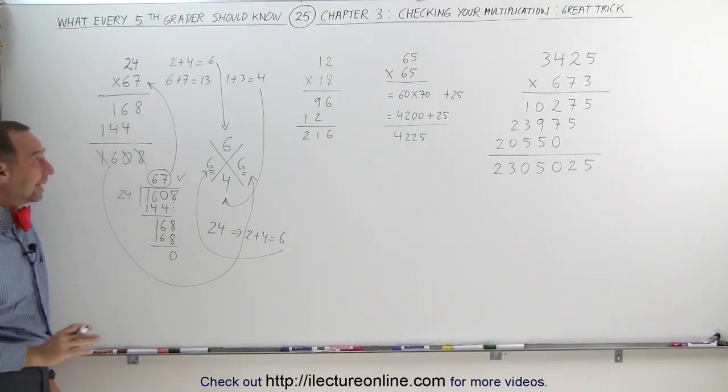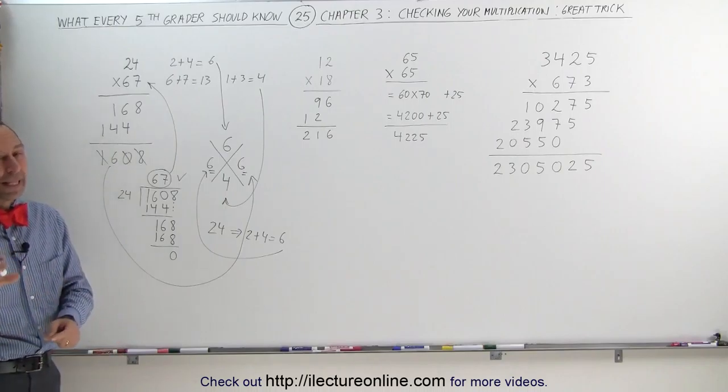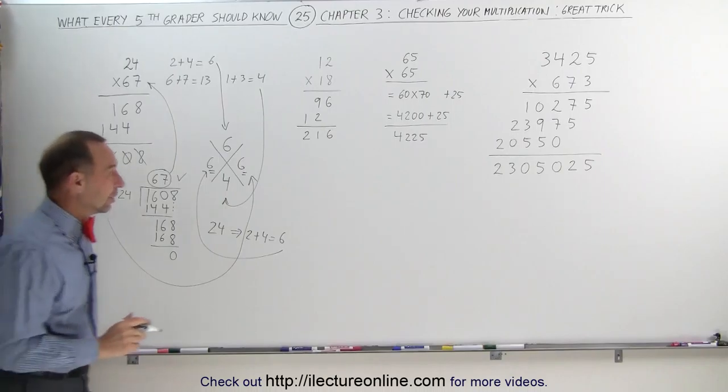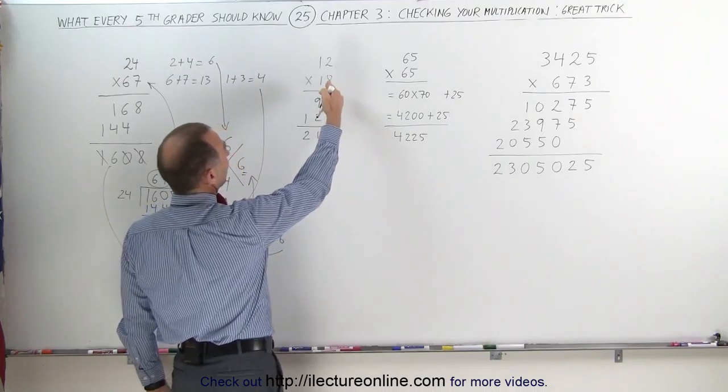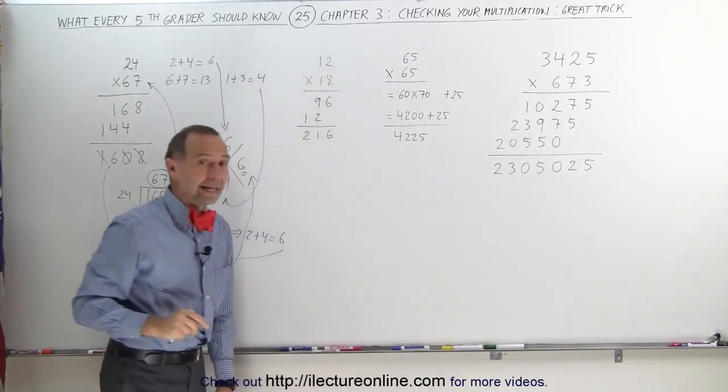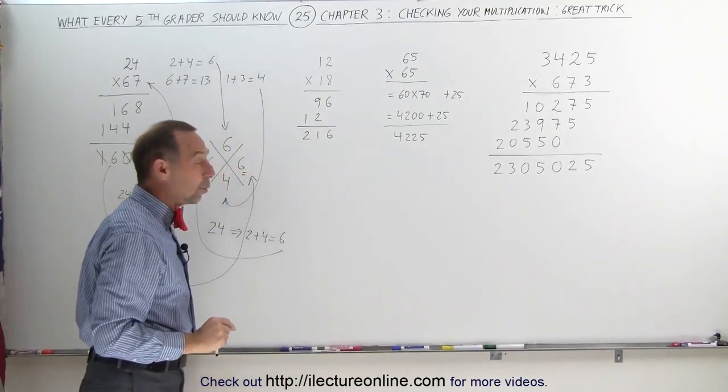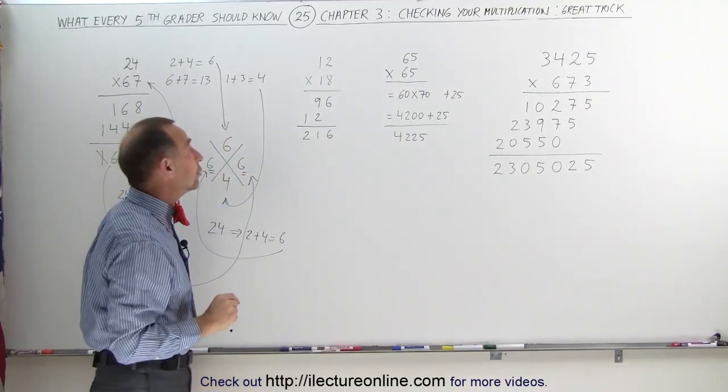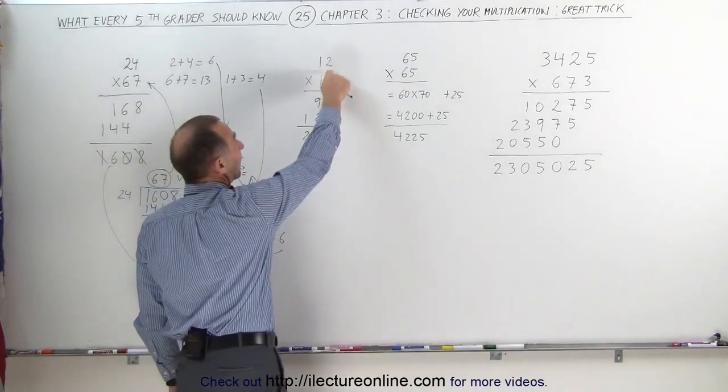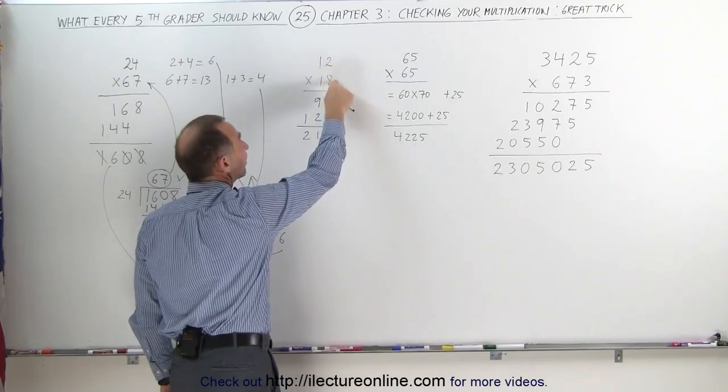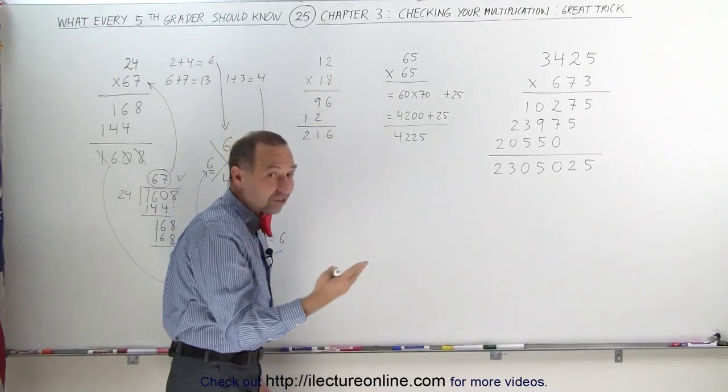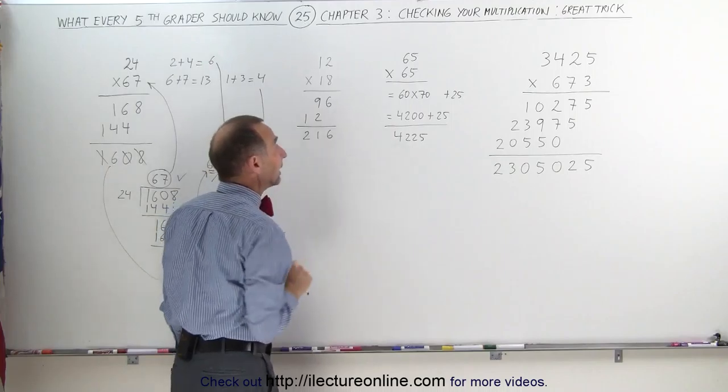Okay, if you didn't quite get that, we'll do a couple more examples, and by then I think you'll figure out how to do this technique. So here, let's say we're multiplying 12 times 18, and we want to know if our answer 216 is correct. Well, one quick other way we can do is this. We can multiply the last two digits together, 2 times 8 is 16, that ends in a 6, your answer better end in a 6.